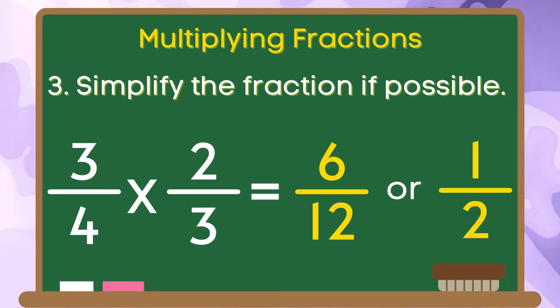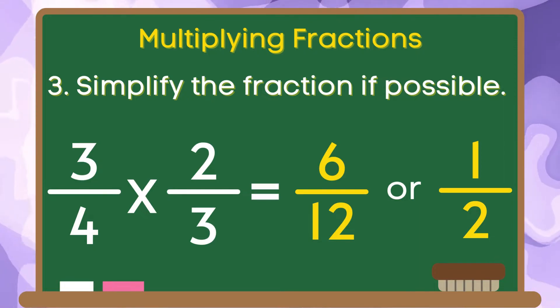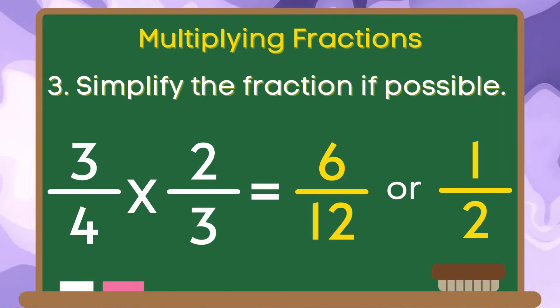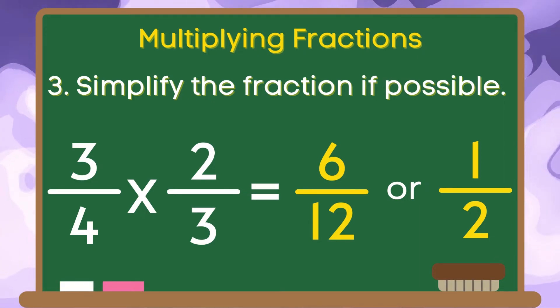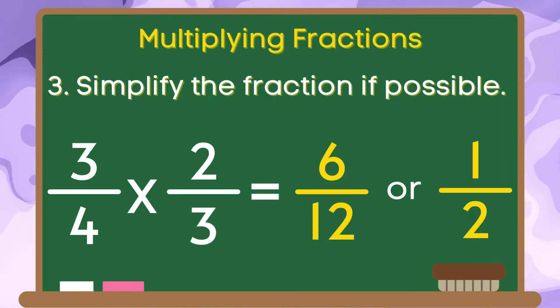Therefore, the product of 3 fourths and 2 thirds is 6 twelfths or 1 half.